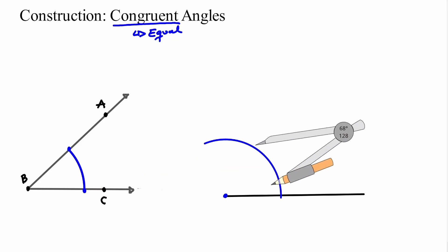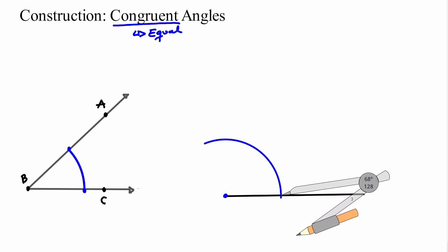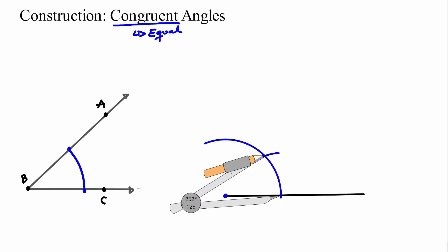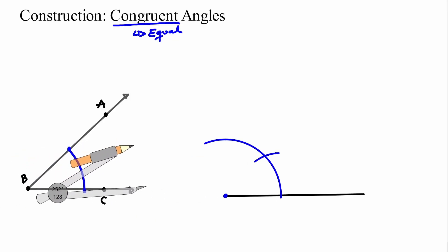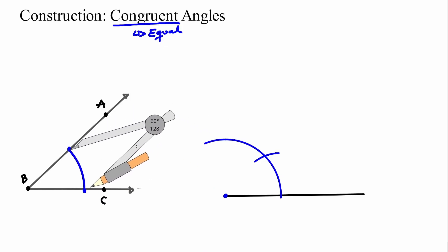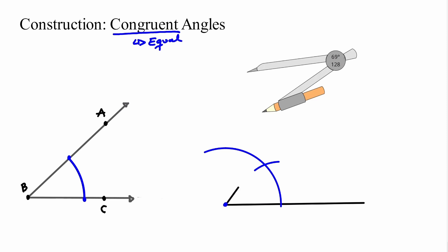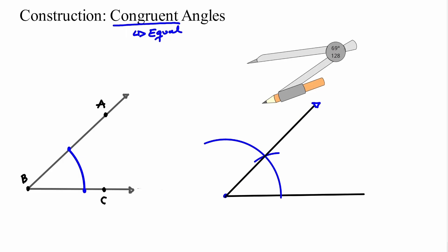I'm going to take this measurement and do the same — put my metal leg here without changing the dimension. What I want you to realize is that this length given to my new angle is exactly the same length as in my other angle. Same length, and that's it. We are done with our steps. I get a ruler or straight edge and connect the vertex to the intersection. This new angle — let's call it angle FED — is congruent to angle ABC.